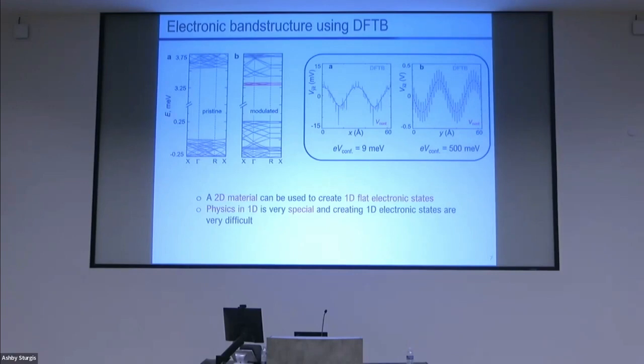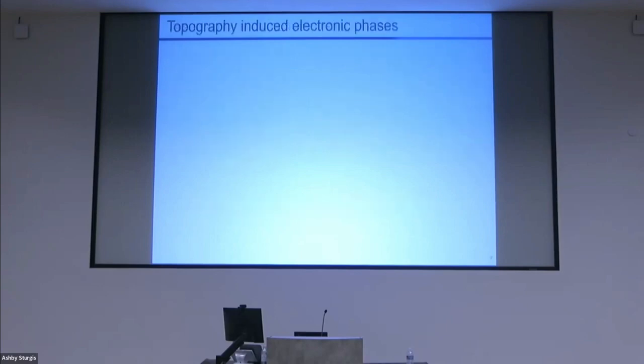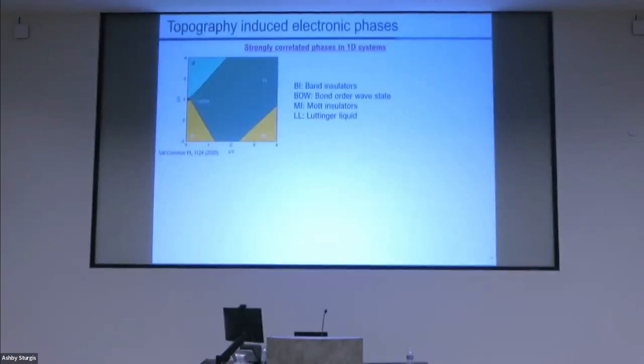Here I have shown that 2D materials and topography can be used to create 1D confined states. Realizing 1D systems is very difficult, so this sort of simple way can be used. There have been talks before where people have already talked about the interesting physics in 1D. Here's the phase diagram that I take from a previous paper. So depending on the chemical potential mu, which is the kinetic energy, and the interaction parameter u, one can have different sort of interesting phases in 1D, for example Mott insulator, charge density wave, etc.